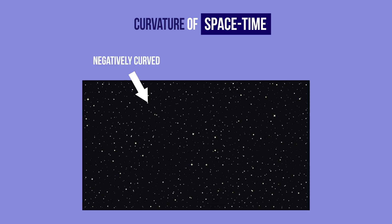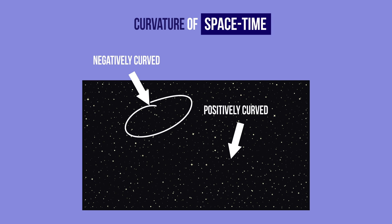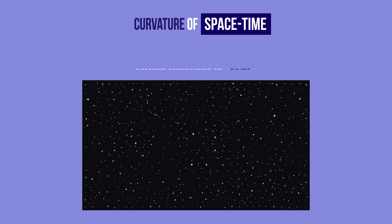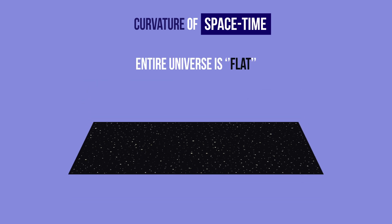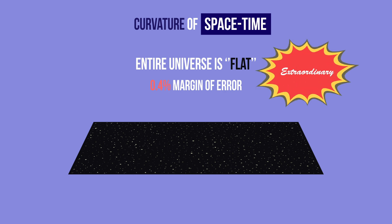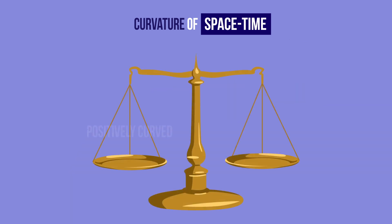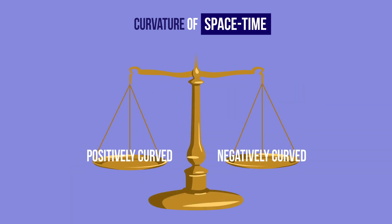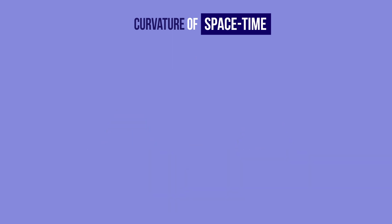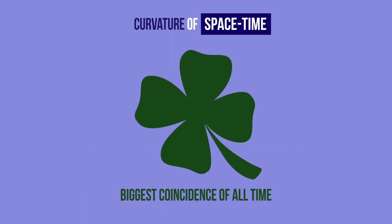Different parts of space can have different curvatures depending on the quantity of mass energy they contain. But as a whole, the universe seems to be flat — at least, that's what physicists calculated with a 0.4% margin of error. This is a very surprising result, because it means that, even if the density of mass energy varies from one region of space to another, on a cosmic scale, there is just the right amount of mass and energy to balance positively and negatively curved regions of space. This could possibly be the biggest coincidence of all time — or rather, spacetime.